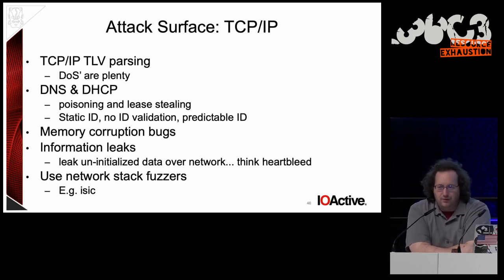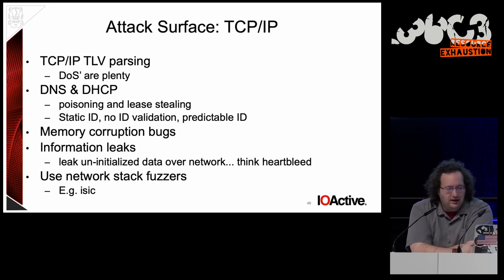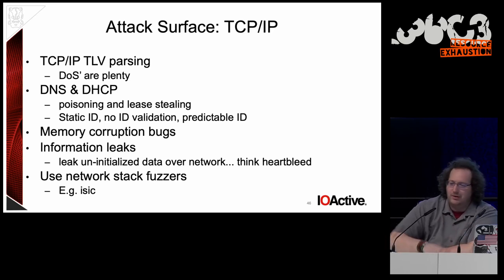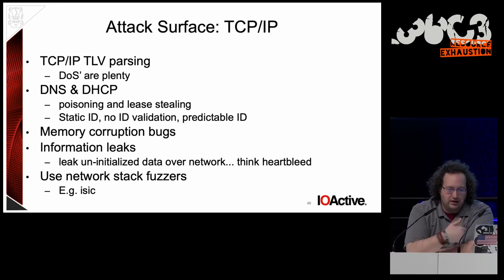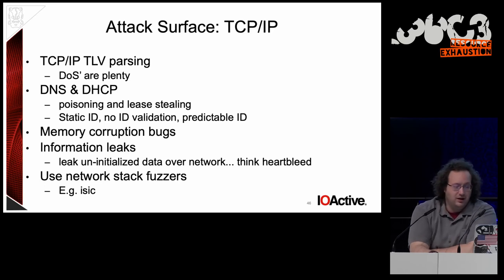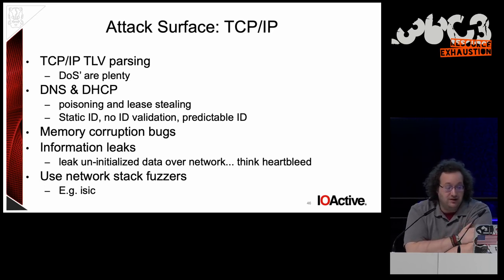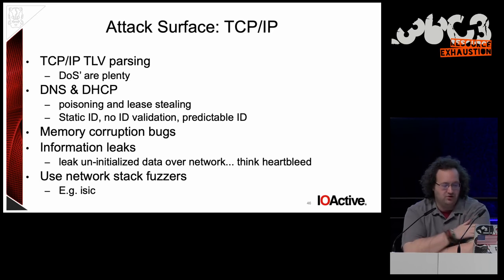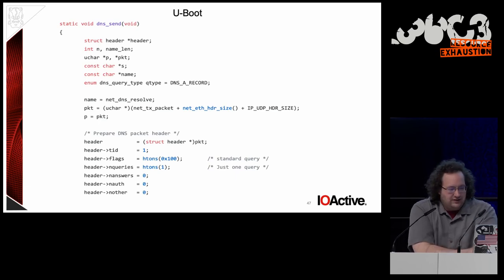Another sometimes overlooked bug when doing network parsing is information leaks — Heartbleed was one example, a perfect primitive. Generally it manifests where you generate some packet as a response, you've done a memory allocation but for some reason haven't initialized something, and you end up sending uninitialized data over the network. If you're looking for these bugs in a boot environment, or building a product, I would highly recommend fuzzing. There are numerous network fuzzers — for network stack fuzzing I'd recommend ISIC. It's pretty old but still incredibly effective, and tends to break most network stacks.